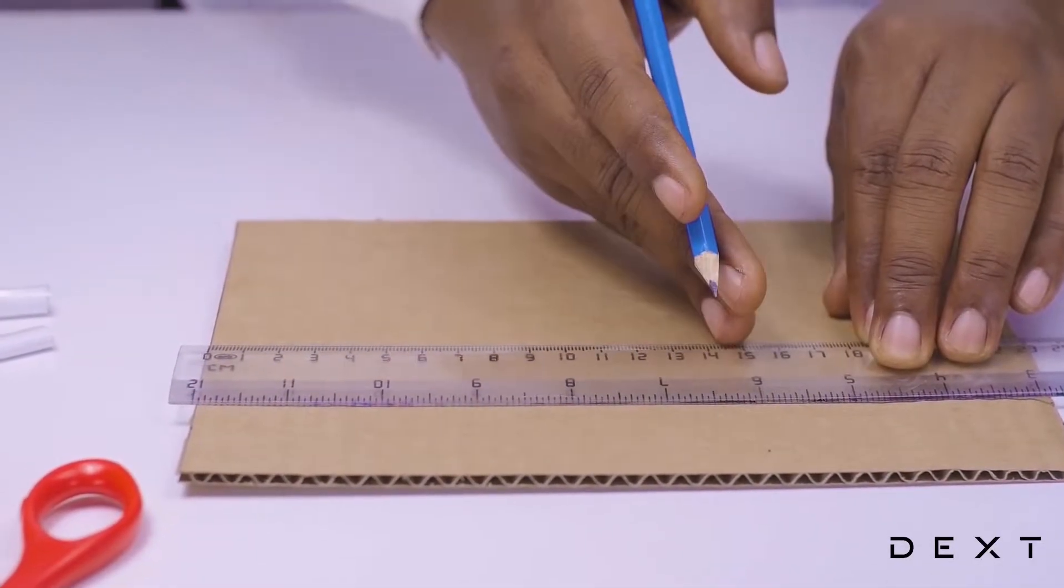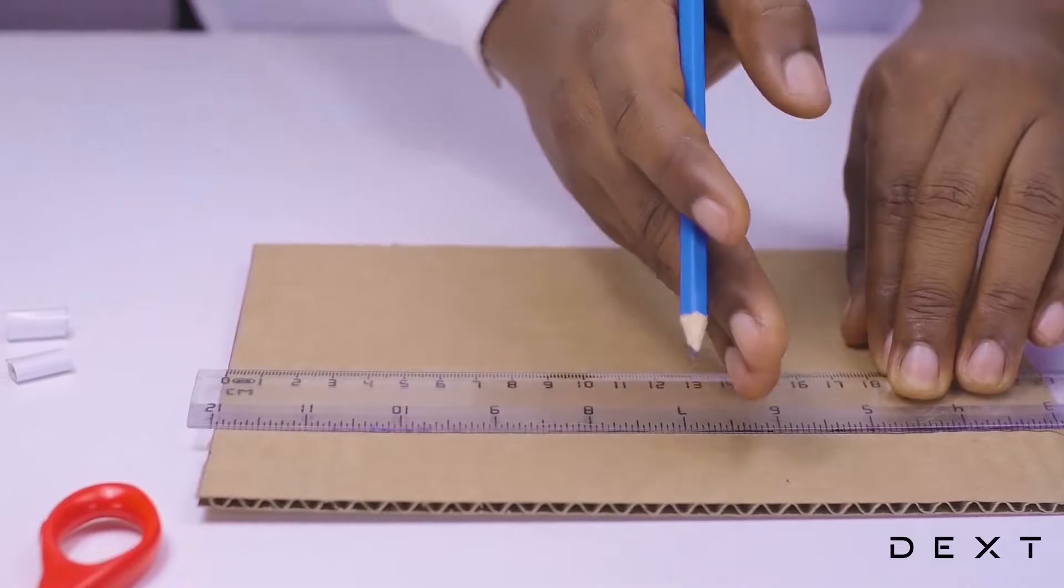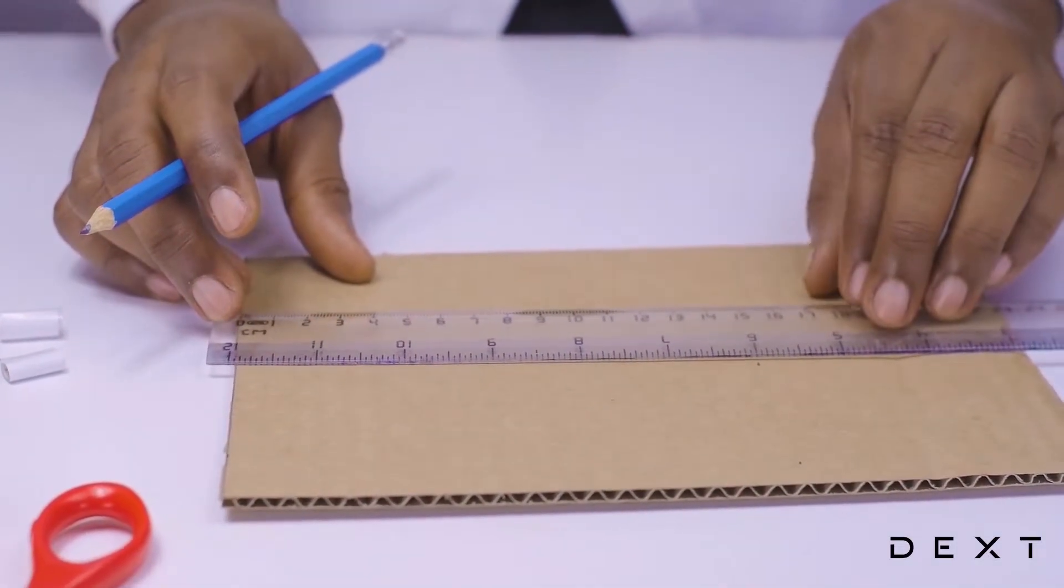It's helpful to have a nice edge on one side of your corrugated cardboard to help you do your measurement.